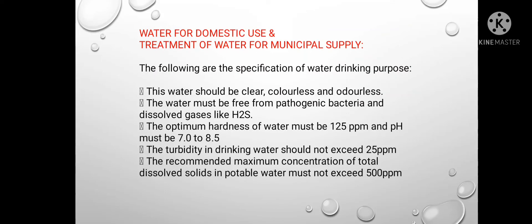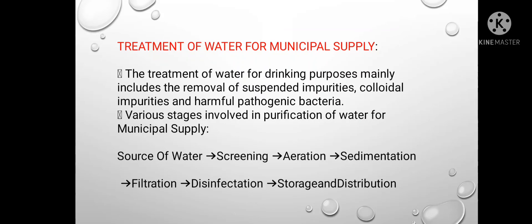Now we will see uses of water in domestic use and treatment of water for municipal supply. The following are the specifications for drinking water: water should be clear, colorless, and odorless; it must be free from pathogenic bacteria and dissolved gases like H₂S; optimum hardness must be 125 ppm and pH must be from 7 to 8.5; turbidity should not exceed 25 ppm; and the recommended maximum concentration of total dissolved solids must not exceed 500 ppm.